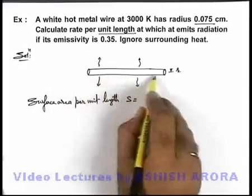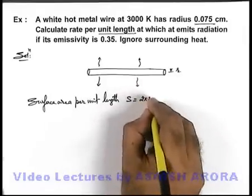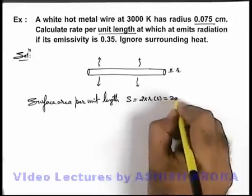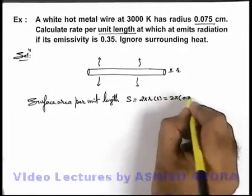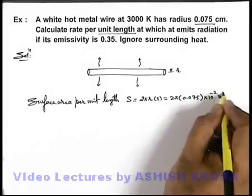Its area we can simply write for one meter length it'll be 2πrl, where length can be taken as one. So it'll be 2π multiplied by 0.075 centimeter into 10 to power minus 2 meter square.